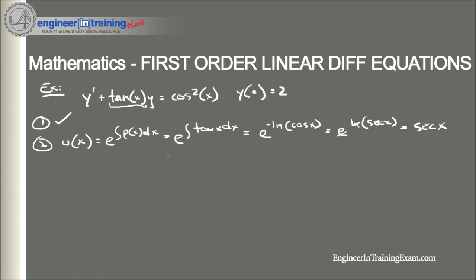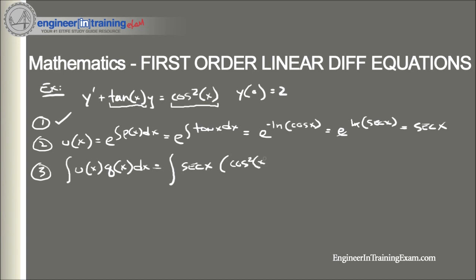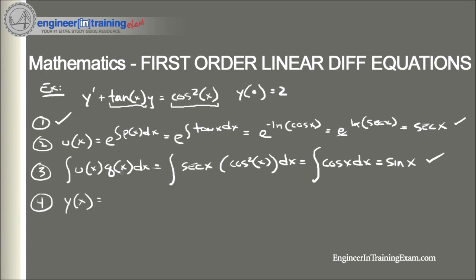Now we solve the integral u(x)Q(x)dx. Since Q(x) = cos²(x) and u(x) = secant(x), we get the integral of secant(x) times cos²(x)dx. Since secant(x) = 1/cos(x), this simplifies to the integral of cos(x)dx = sin(x). So the general form gives y(x) = [sin(x) + C] / secant(x) = sin(x) + C·cos(x).